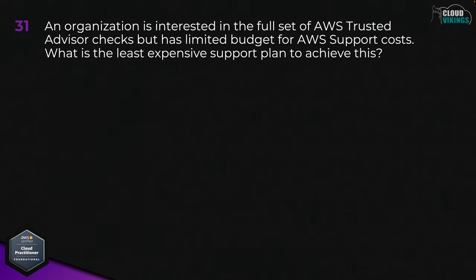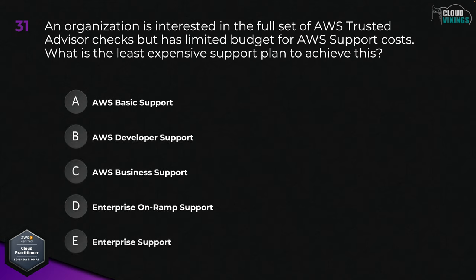Question thirty-one: an organization is interested in the full set of AWS Trusted Advisor checks but has a limited budget for AWS support costs. What is the least expensive support plan to achieve this? Options are: A, AWS Basic Support; B, AWS Developer Support; C, AWS Business Support; D, Enterprise OnRamp Support; or E, Enterprise Support. The correct answer is C, AWS Business Support.